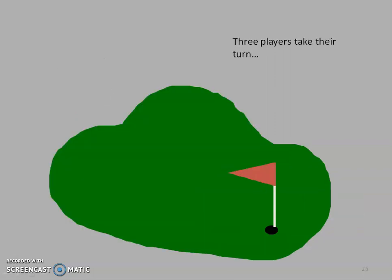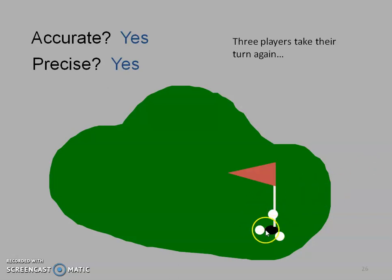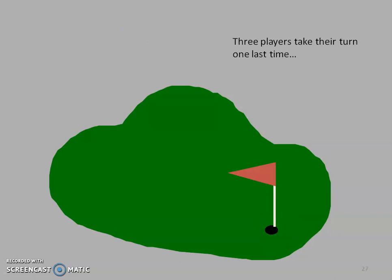So does anybody play golf? Well, three players take their turn. So are these guys accurate? Inconceivable! Are these guys precise? Yes! Because they're hitting the same area, but not the area that you really want it to. How about these guys? Accurate? Yes! And precise? Yes! So these ladies are accurate because they're hitting the same spot and they're precise because they're hitting the same spot. So accurate because they're hitting the spot that they want and precise because they're hitting the same spot.